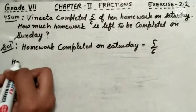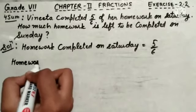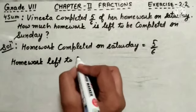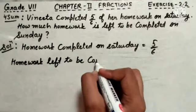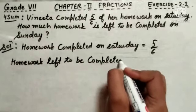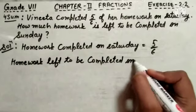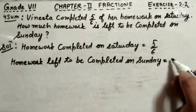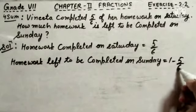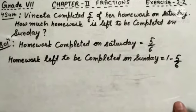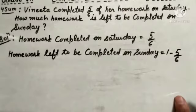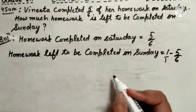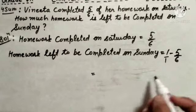And, homework left to be completed on Sunday will be equals to 1 minus 5 by 6. Now, what we are going to do? As we have already done in the previous exercises, we have to subtract these two fractions. This can be written as 1 upon 1. So, in the next step, this will be equals to what?